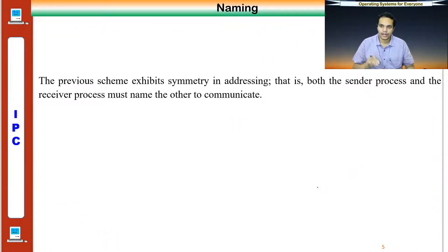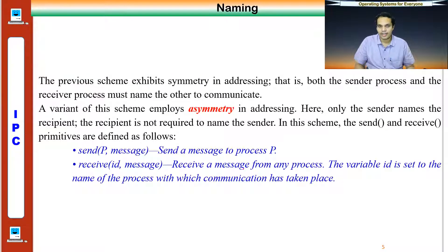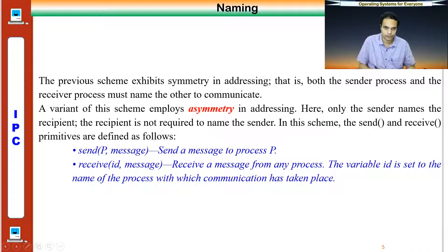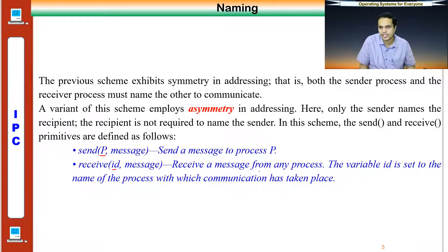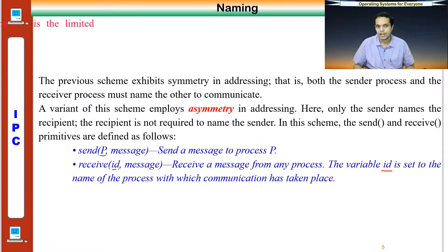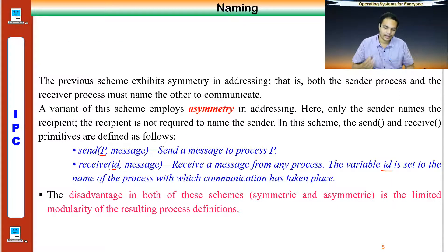There is a slight variation called asymmetric addressing. In symmetric addressing, both sender and receiver processes must name each other explicitly — I specify to whom I am sending and from whom I am receiving. In asymmetric addressing, only the sender names the recipient, but the receiver is not required to name the sender. The receive primitive becomes: receive(id, message), where id is set to the name of the process from which communication took place — any process can send.